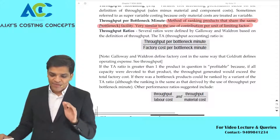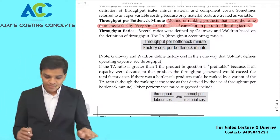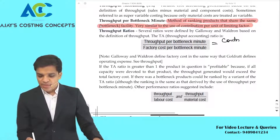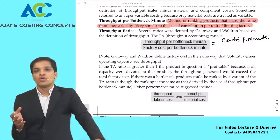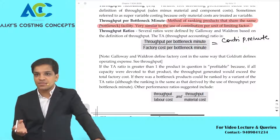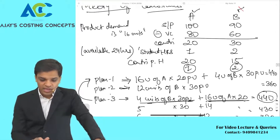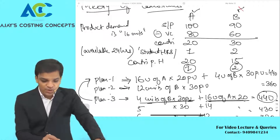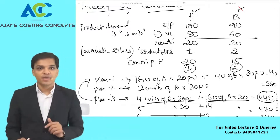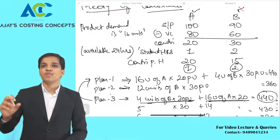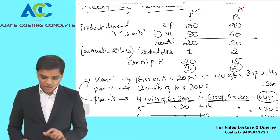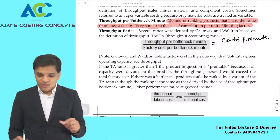For example, in our scenario instead of hours if we use minutes: throughput accounting for Product A = 20 rupees per minute; for Product B = 15 rupees per minute. That is contribution per minute. Then divide by factory cost per bottleneck minute — how much cost you are incurring on that product per minute. Suppose factory cost is 5 rupees per minute and contribution per bottleneck minute is 8 rupees — throughput accounting ratio = 8 ÷ 5 = 1.6 times.